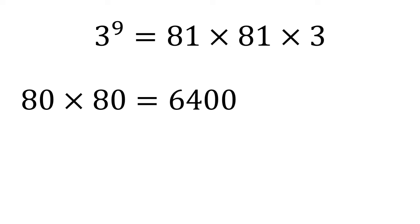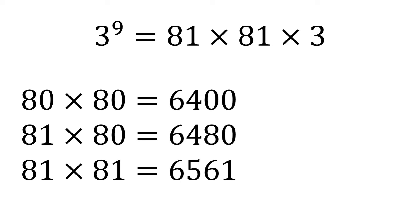We can now change this into 81 times 81 with relative ease. So 81 times 80, that's an extra 80. So add that on, 6480. We want to do 81 times 81, however, so that's going to be an extra 81, which if we add on gives us 6561.